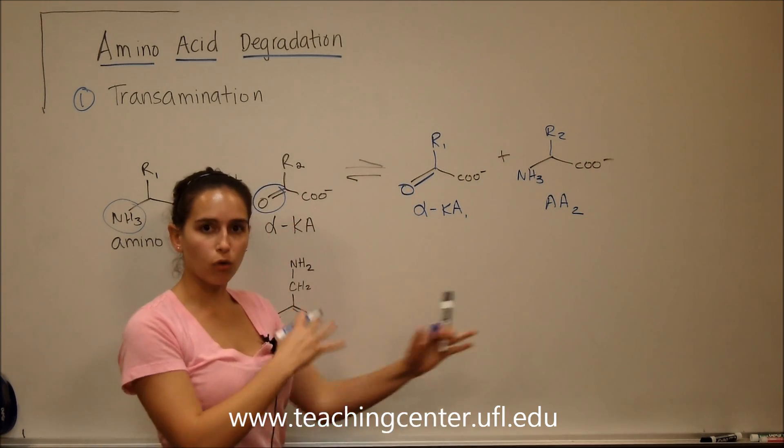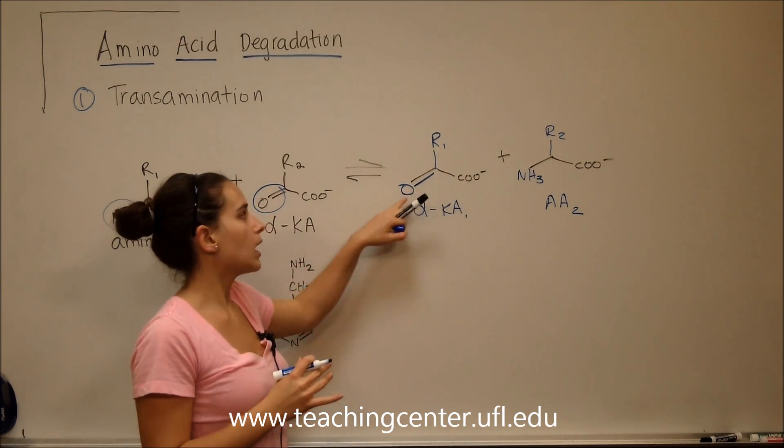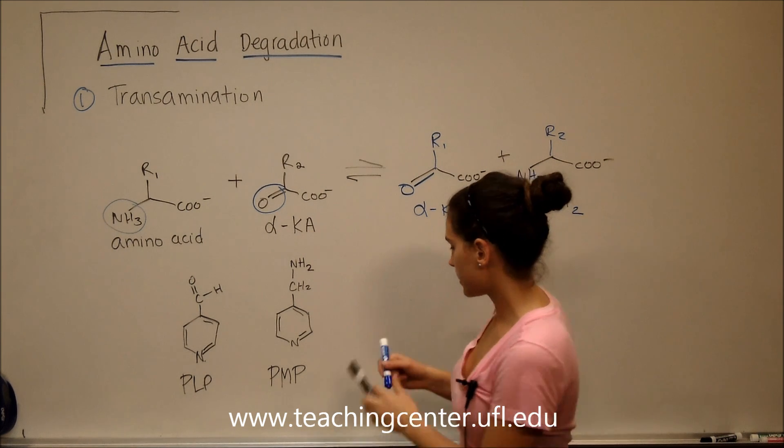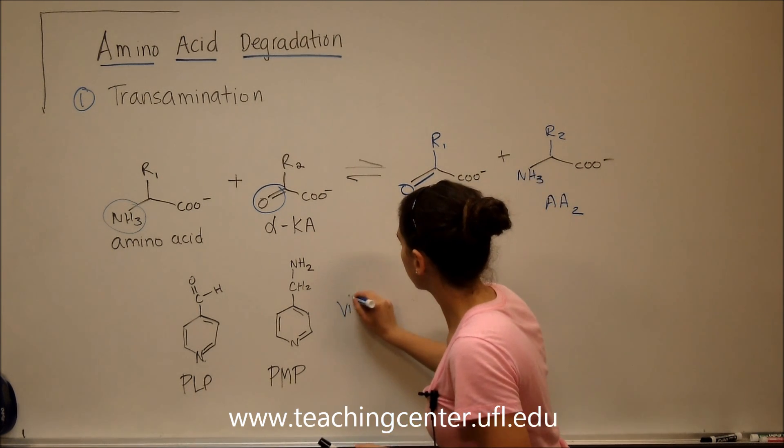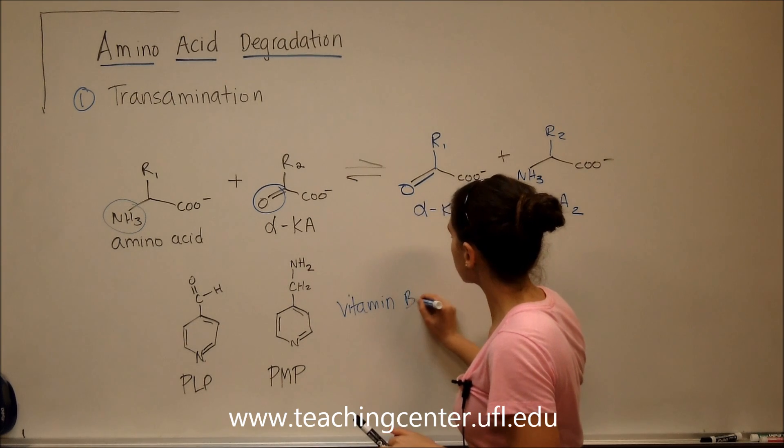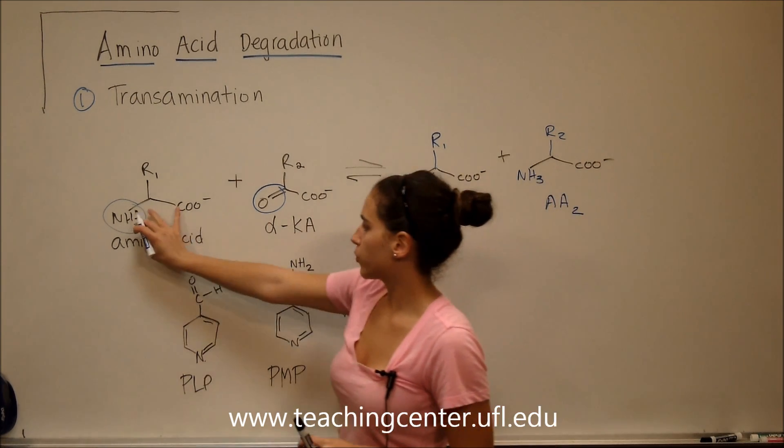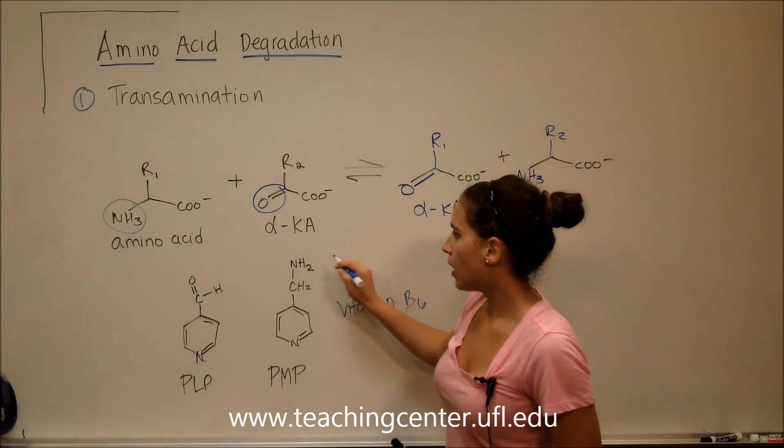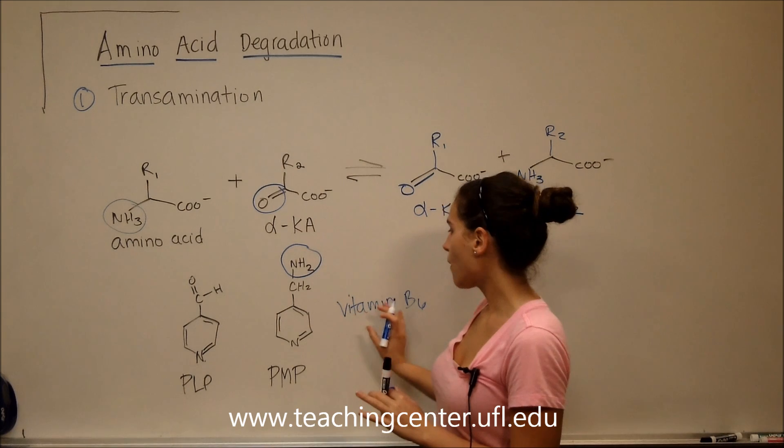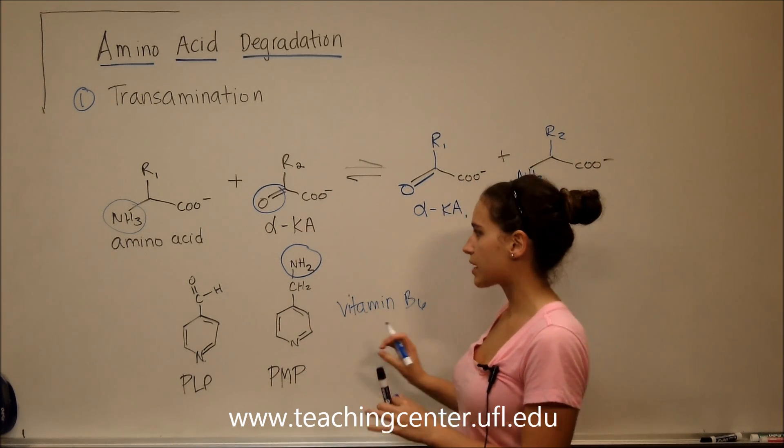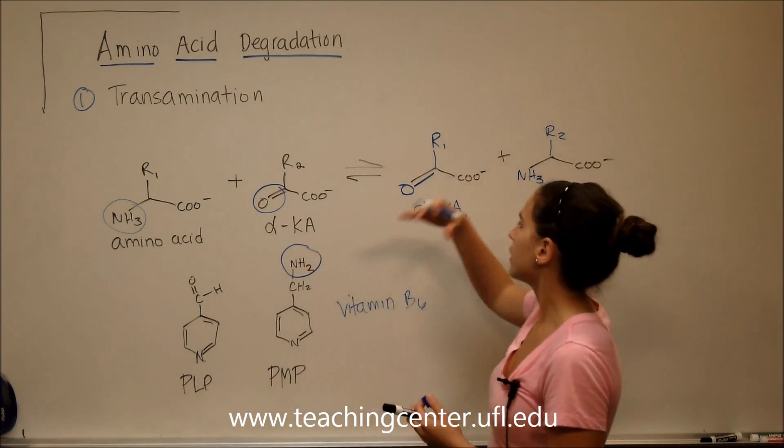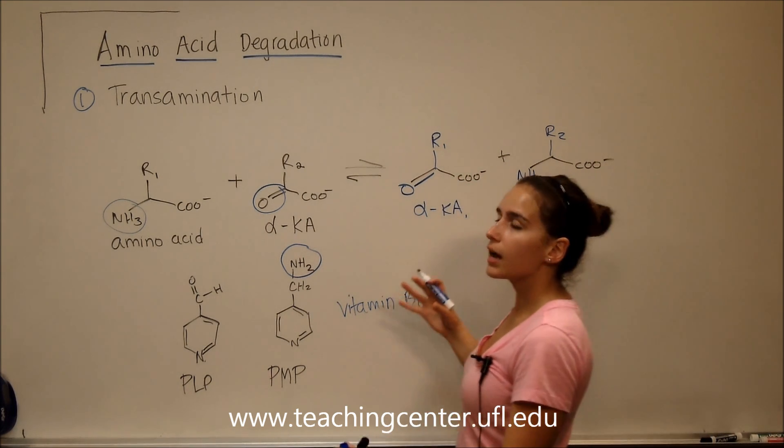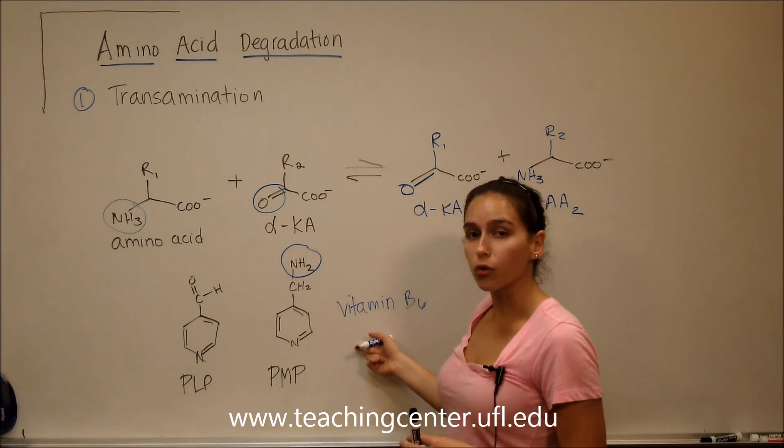It's simply that inner conversion of the NH3 and the double bond O. What happens is we use vitamin B6 to carry that amino group. We put it on here. First, it's PLP. Then, we put it on. That vitamin B6 carries that amino group. Then, it puts it on that second amino acid. It's not immediate transfer because we're using that cofactor.